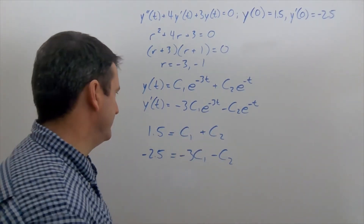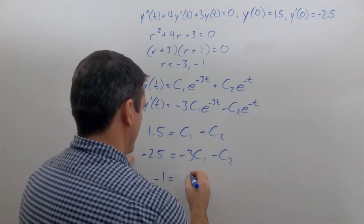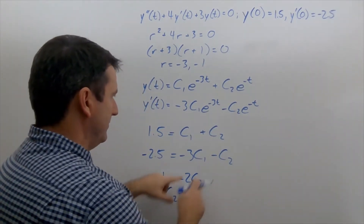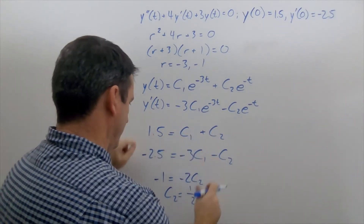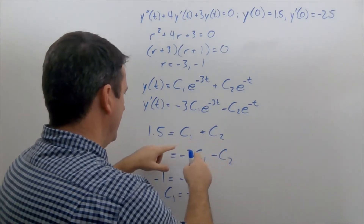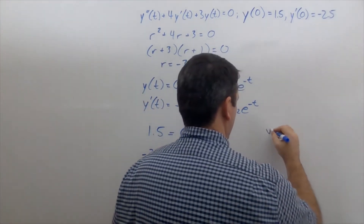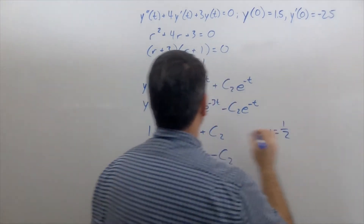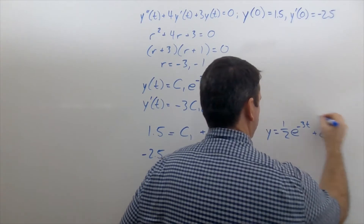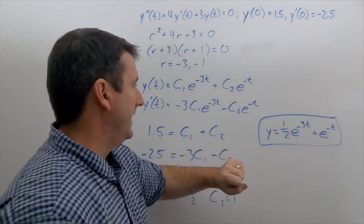Now we can solve for c₁ and c₂. Adding the two equations together to eliminate c₂, we get -1 = -2c₁, so c₁ = 1/2. And if c₁ = 1/2, then c₂ = 1. So our solution is y = (1/2)e^(-3t) + e^(-t). There's our analytical solution.